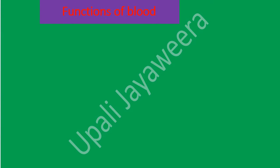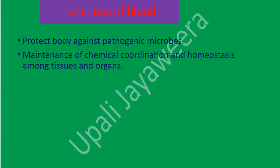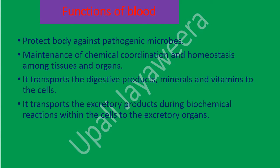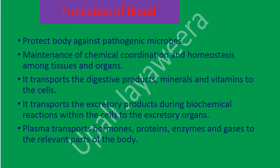Now we will see the functions of blood. Blood protects the body against pathogenic microbes. It maintains chemical coordination and homeostasis among tissues and organs. It transports digestive products, minerals, and vitamins to the cells. Blood transports excretory products from biochemical reactions within the cells to the excretory organs. Plasma transports hormones, proteins, enzymes, and gases to the relevant parts of the body.